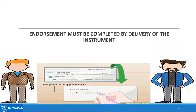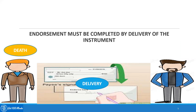The fourth essential is that endorsement must be completed by delivery of the instrument. Whenever an endorsement is made, it should be completed by the delivery process. Suppose a person is found dead and there is a check in his bag written to some other person, but it was not delivered when he was alive. In that case, the endorsement is no longer valid because it was not completed by delivery, and the person in whose name it was written will not hold any right on the proceeds of that check. Endorsement must always be completed by delivery.